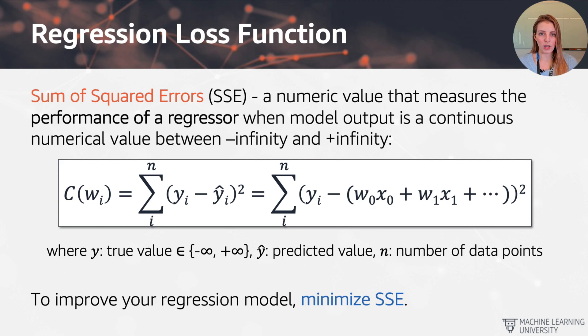So what we want to do now to improve the fit, to get a better line of prediction, is we want to minimize this sum of squared errors. The value that we get from calculating the sum over all of the differences between the true data points and the predicted data points squared should be minimal. And then we have the best line of fit.